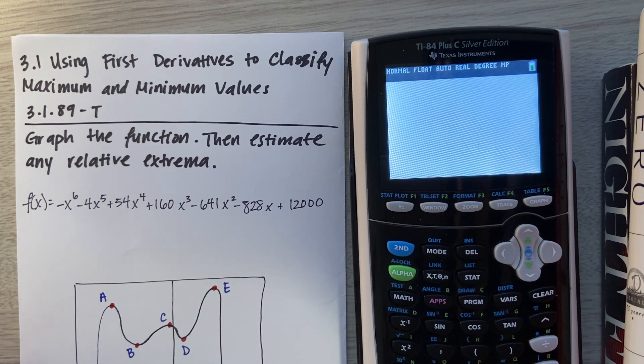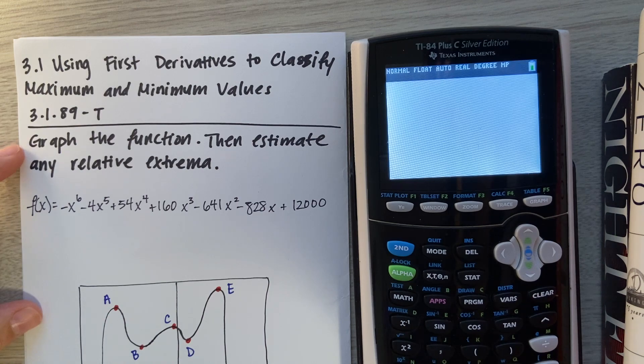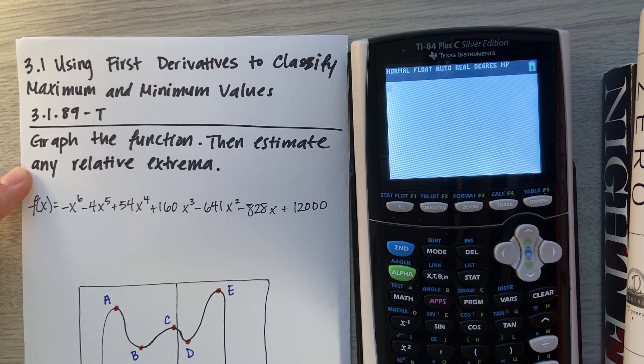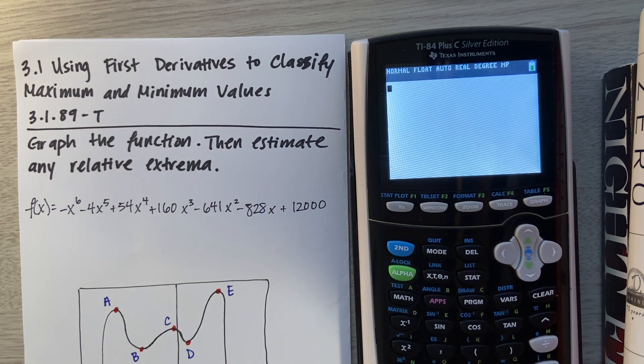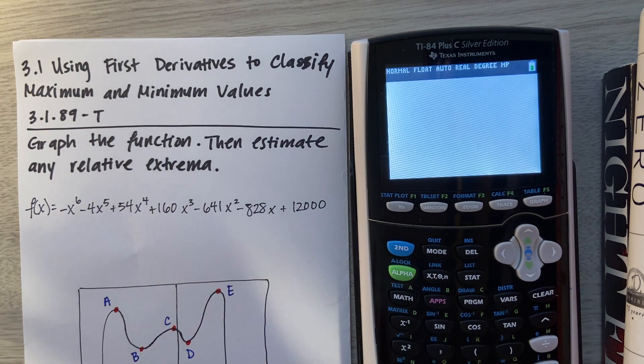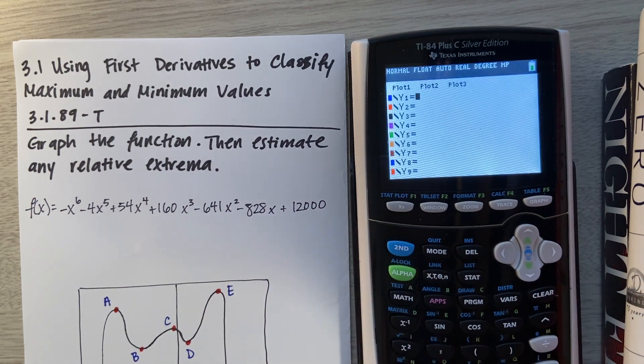The goal of this problem is to first graph the function, and then estimate any relative extrema. First things first, we want to graph the function. On our graphing calculator, we're going to go to the upper left-hand side where it says Y equals, click that, and then insert this equation.